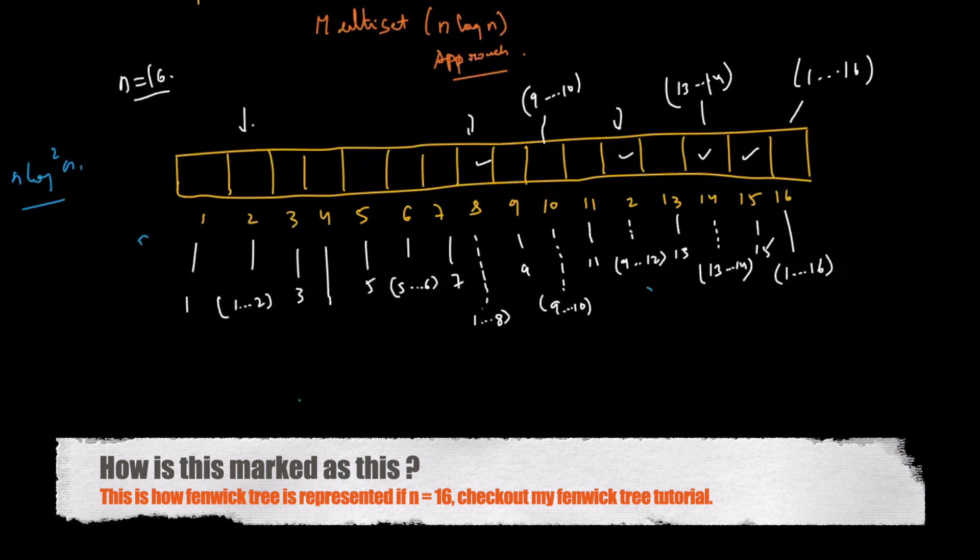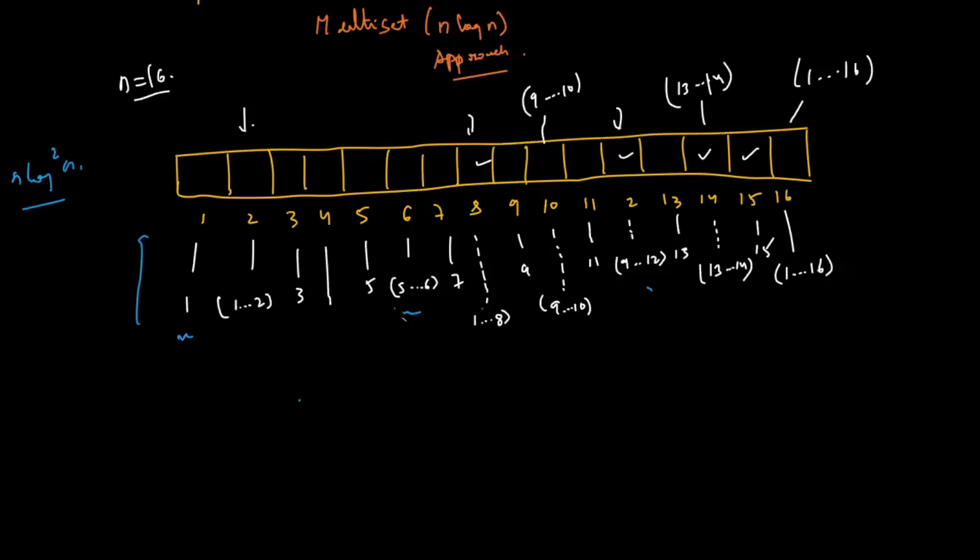We know that the Fenwick tree structure looks something like this if I give you n equal to 16, where the first index means it will store the sum of elements from 1 to 1, and the sixth index means it will store the sum between 5 and 6, and so on.